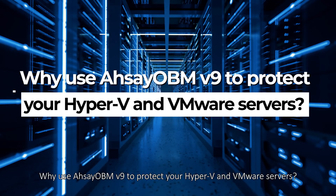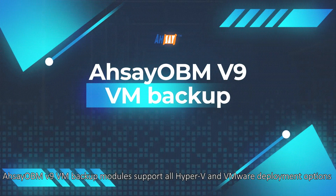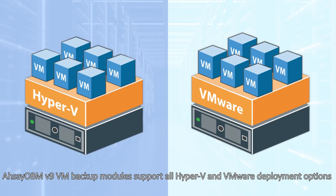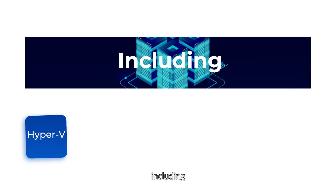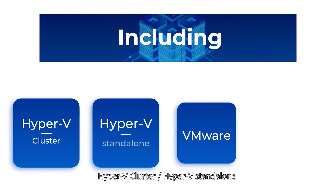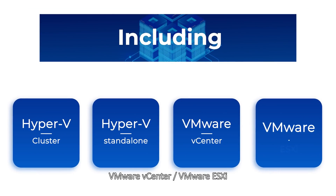Why use RCAOVM version 9 to protect your Hyper-V and VMware servers? RCAOVM version 9 VM backup models support all Hyper-V and VMware deployment options, including Hyper-V Cluster, Hyper-V Standalone, VMware vCenter, and VMware ESXi.